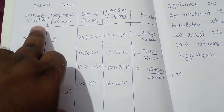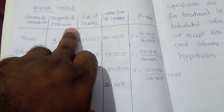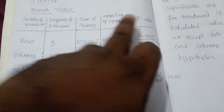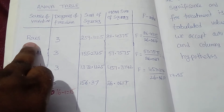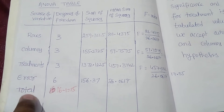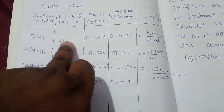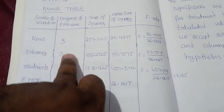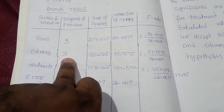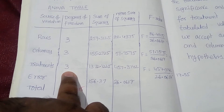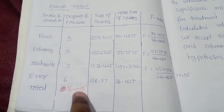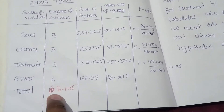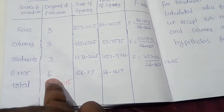Now we construct the ANOVA table with columns: Source of Variation, Degrees of Freedom, Sum of Squares, Mean Sum of Squares, and F Ratio. Sources are: Rows, Columns, Treatments, Error, and Total. Degrees of freedom: Rows = 4−1 = 3, Columns = 3, Treatments = 3, Total = 16−1 = 15, and Error = 15−9 = 6.